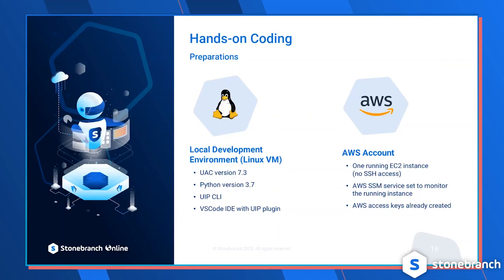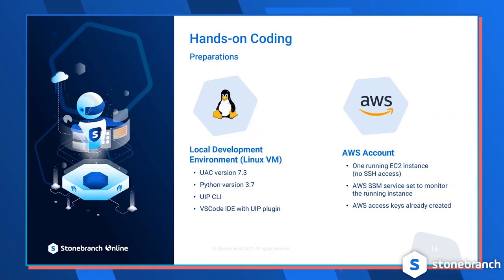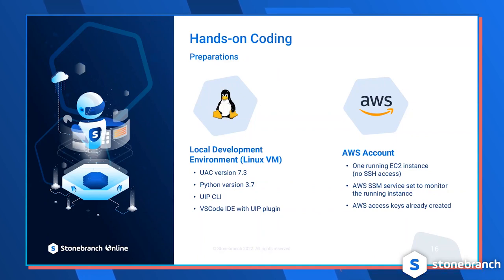Looking at the dev environment: locally we have set up a Linux VM with UAC version 7.3, Python version 3.7, UIP CLI — a Python tool that facilitates creating, building, packaging, and deploying extensions — and VS Code with the UIP plugin already installed. The UIP plugin is a wrapper of UIP CLI, so you get the same functionality through UIP CLI from a terminal if you don't use VS Code. On the AWS side, we have one EC2 instance running, with SSM service configured to monitor it, and access keys already created.